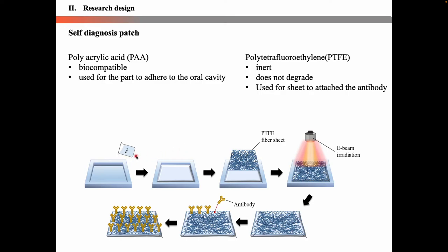First, prepare a PAA solution, and put the PAA solution in the mold, then place a PTFE sheet on top of the PAA solution. After that, apply e-beam irradiation to cross-link the polymer, and bind the antibody to the PTFE sheet to make the coronavirus detection patch.